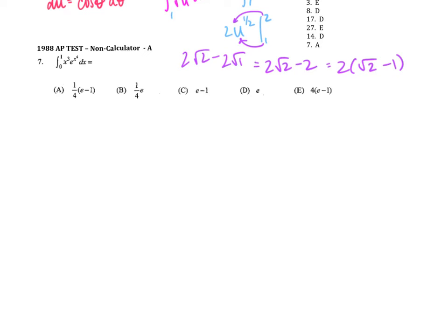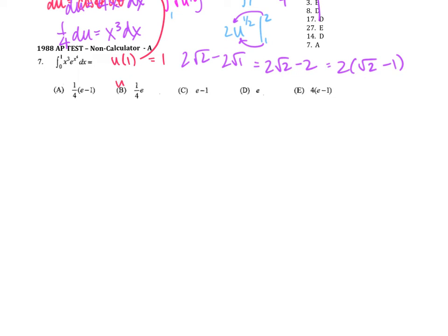Lots of exponents in this one. I'm going to make my u equal to x to the 4th, because the derivative would be 4x cubed, and I need an x cubed, so I divide out my 4 and get x cubed dx. I'll replace x cubed dx with 1/4 du, and replace the x to the 4th in e to the x to the 4th with u. The antiderivative of e to the u is e to the u. My upper bound was 1; plugging in: 1 to the 4th is 1. My lower bound was 0; plugging in: 0 to the 4th is 0. So my bounds stay the same, 0 to 1.